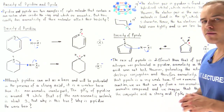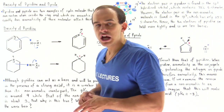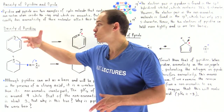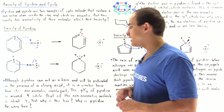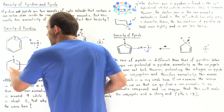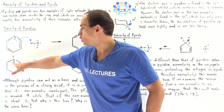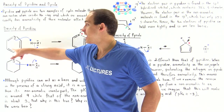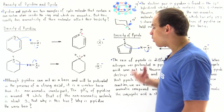If we examine the pKb values of these two molecules, the pKb of pyridine is about 8.8, while the pKb of the non-aromatic counterpart is around 3. So the non-aromatic molecule is a stronger base and will be more likely to take away the H and donate its two electrons on the nitrogen atom.